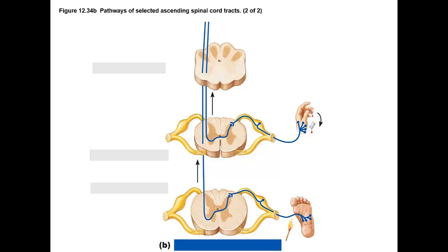To summarize the ascending sensory tracts: most have three neurons in series, except the spinal cerebellar tract which has only two. For all tracts, the first-order neuron starts at the sensory receptor and ends at the dorsal horn. That is a common feature across all ascending tracts and is a useful summarizing concept — the first-order neuron always starts with the sensory receptor and ends at the dorsal horn.